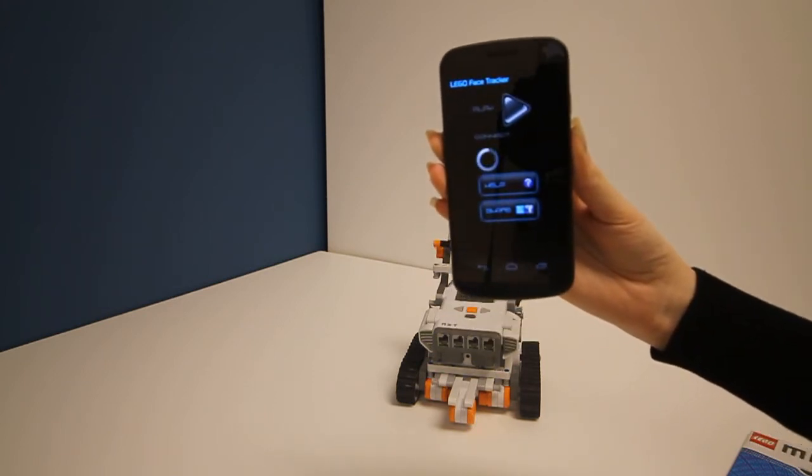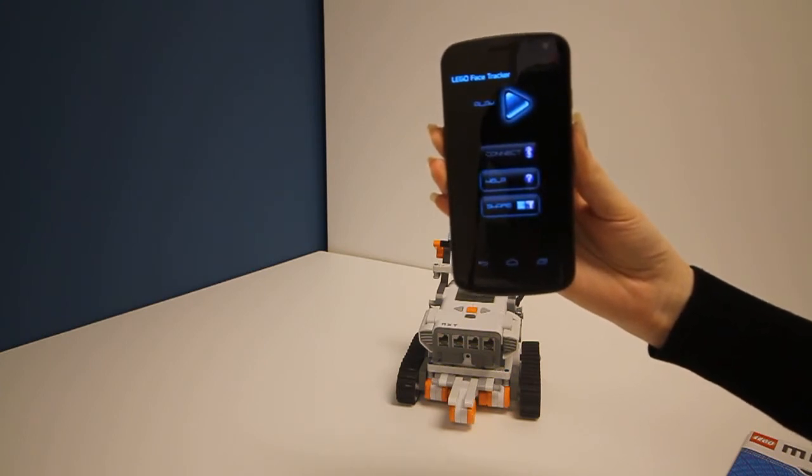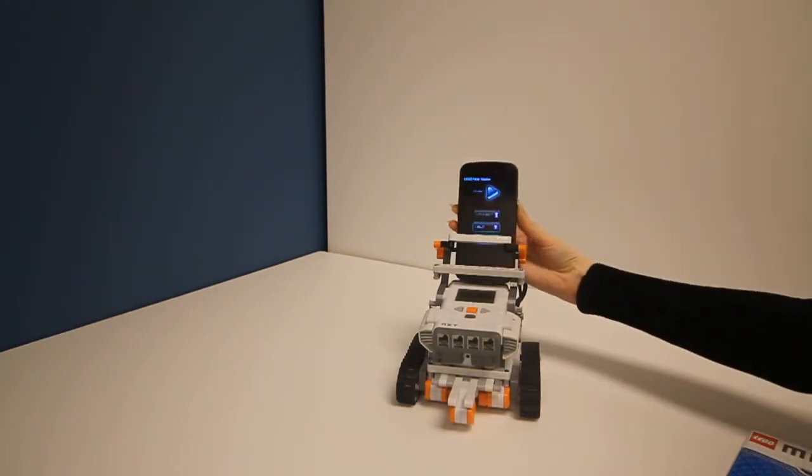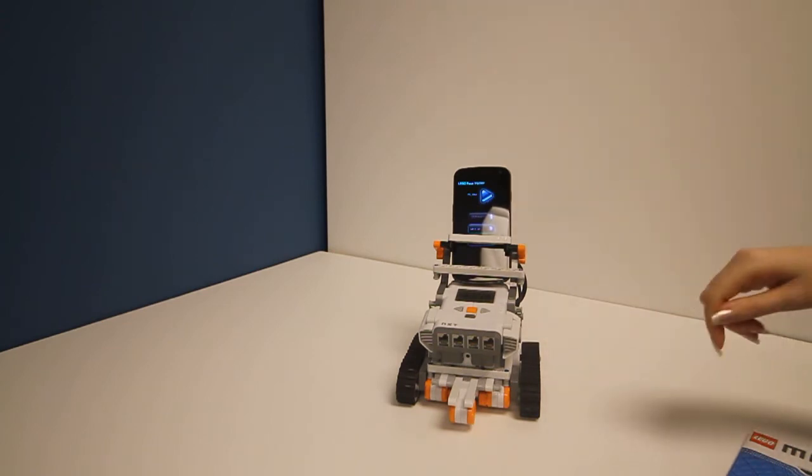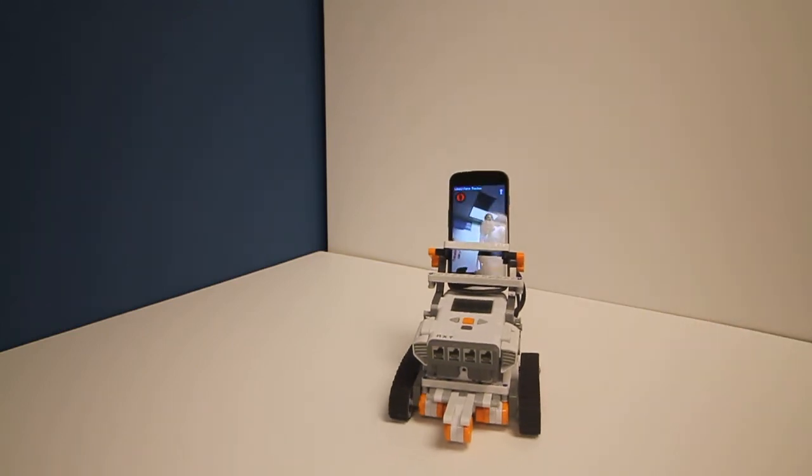It takes a second, and once we are connected, we are putting the Android phone on the cradle on the car. And then we hit the play button, and we are basically ready to go.